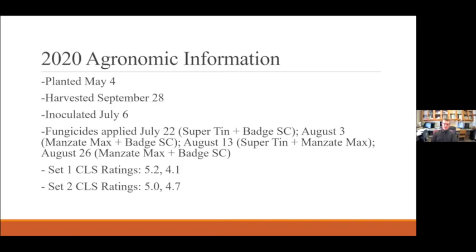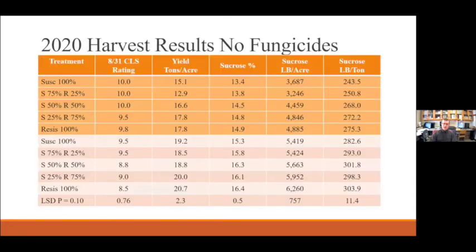In 2020 we did the trial again at the Foxholm sites. We planted on May 4th, harvested on September 28th, and inoculated the plots on July 6th. Fungicide applications were made on July 22nd, August 3rd, August 13th, and August 26th. The first set of CLS ratings were 5.2 and 4.1 and the second set were 5.0 and 4.7. In 2020 we had overwhelming CLS pressure — in late June, July, and early August it seemed like it was always raining at our Foxholm plots and we had standing water for the entire month of July.